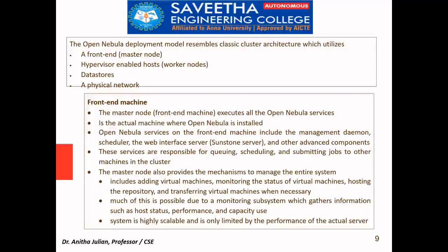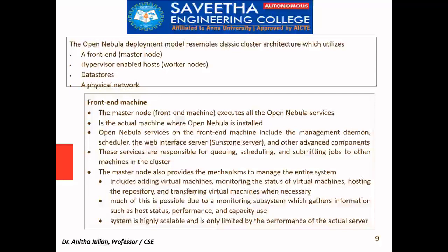OpenNebula consists of a front-end master node, hypervisor-enabled hosts called worker nodes, a data store (the repository), and the physical network. The front-end machine is the master node where OpenNebula is installed. It executes all OpenNebula services including management, scheduling, queuing, and submitting jobs to other machines in the cluster. It also handles adding virtual machines, monitoring their status, hosting the repository, and running monitoring subsystems. It is highly scalable with performance checked regularly.